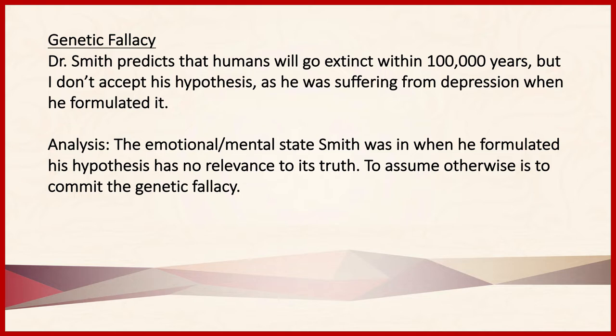When we evaluate the argument, we should be able to explain how it is that the arguer is using the origins of the other's argument or belief to dismiss the argument or belief. For example, Dr. Smith predicts that humans will go extinct within 100,000 years, but I don't accept his hypothesis as he was suffering from depression when he formulated it. The emotional or mental state that Smith was in when he formulated his hypothesis isn't relevant to the hypothesis' truth. When we assume otherwise, we're committing the genetic fallacy.